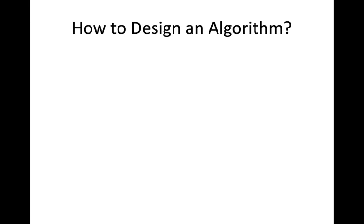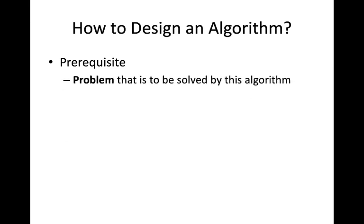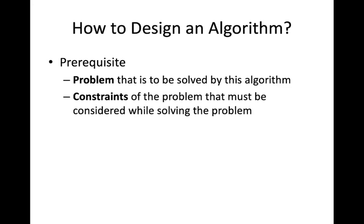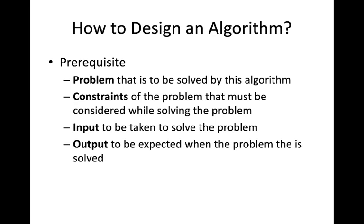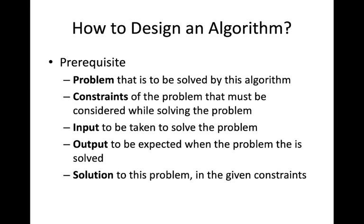How do you design an algorithm? There are prerequisites before writing an algorithm. First: the problem to be solved should be defined. Second: the constraints of the problem should be identified. Third: the inputs to be taken — what inputs are needed to solve the problem. Fourth: the expected output. Fifth: the solution to the problem within the given constraints.